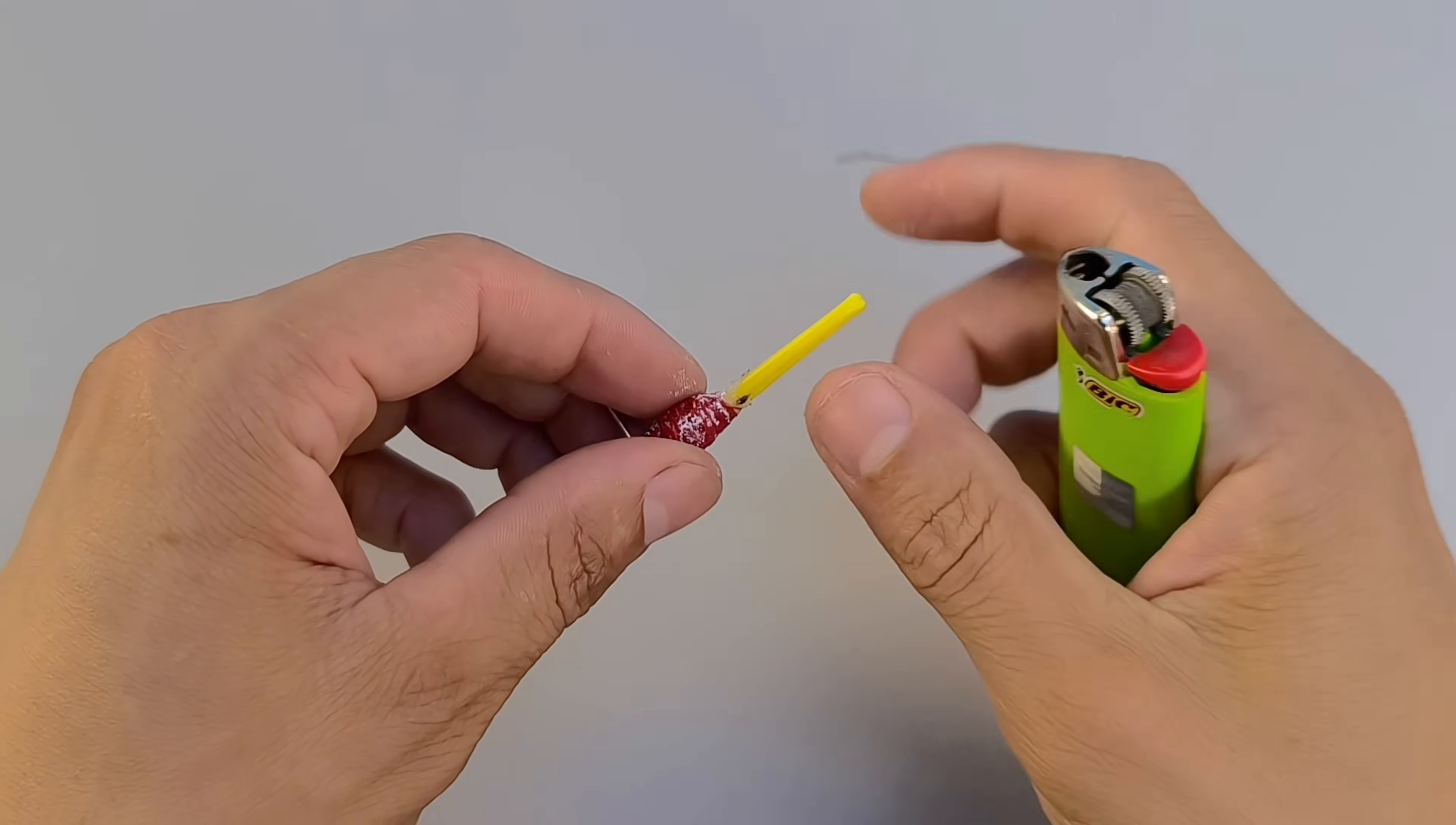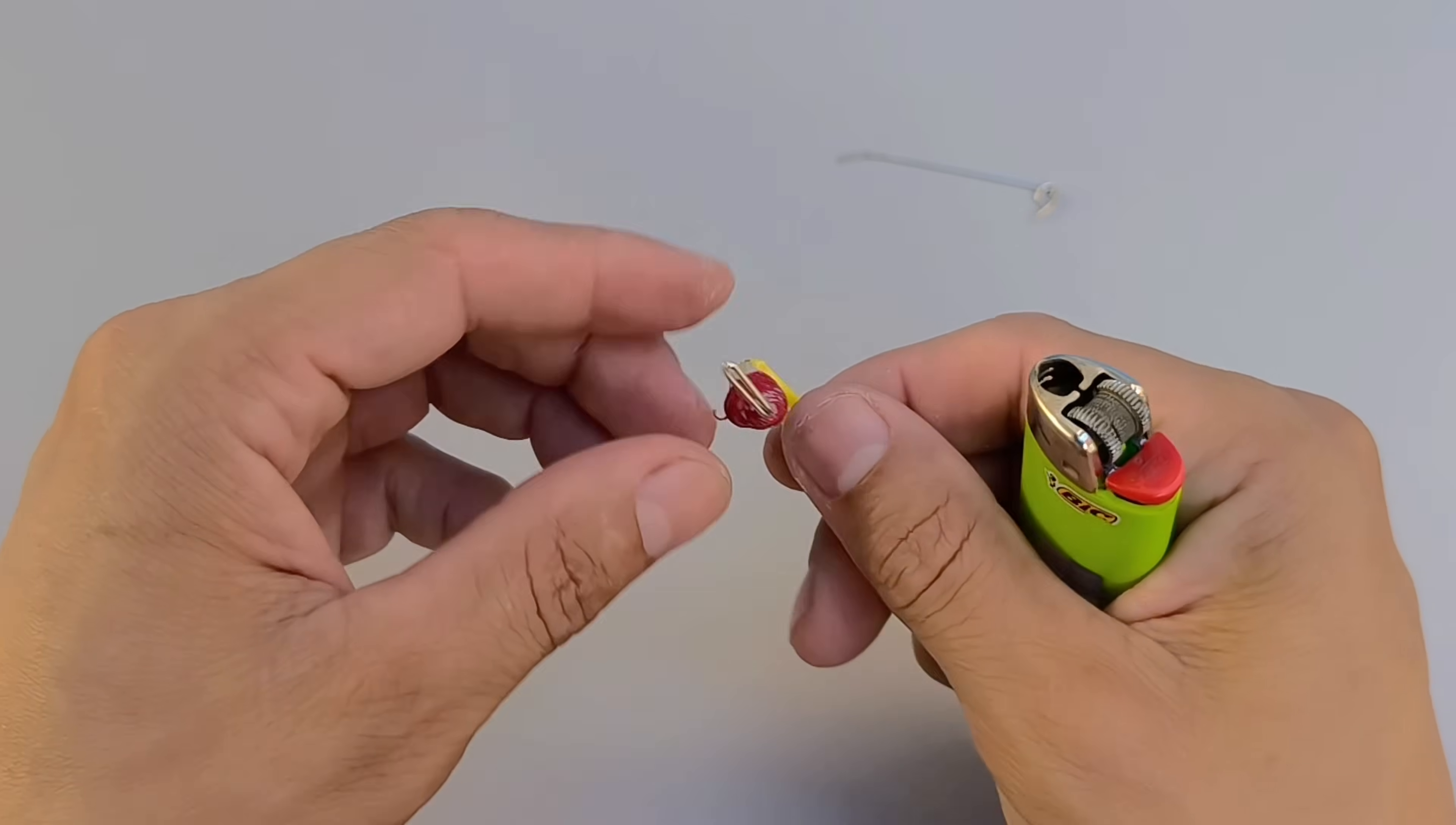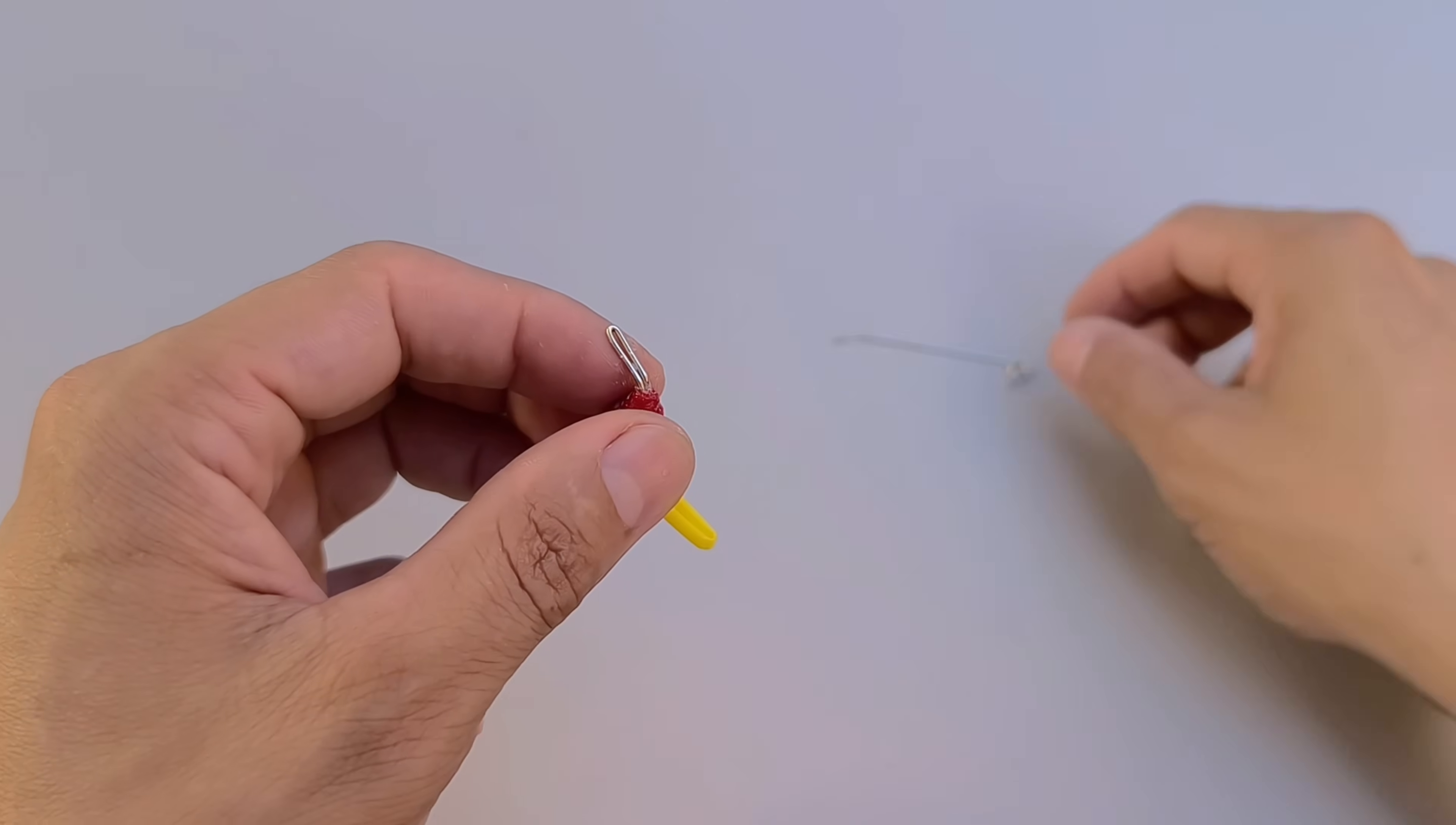Next, use a lighter to lightly heat the cotton swab straw. Carefully make a small bend, creating a sort of crank. This bent part is what will give support and stability to our improvised tool. The end result resembles a mini lever-shaped device, prepared to act inside the lock cylinder.